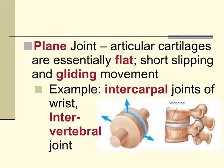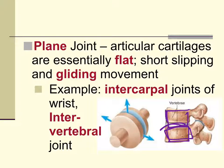The intertarsal bones are your ankle bones. Another example is the intervertebral joint, which is between two vertebrae. What happens is the vertebra above glides on top of the one below.